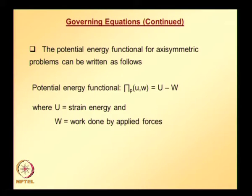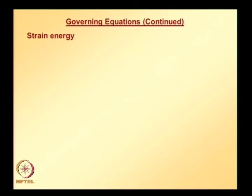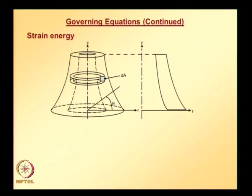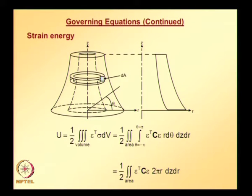We need to see how to calculate strain energy and the work done by the applied forces for axisymmetric problems. Strain energy is defined as the volume integral of epsilon transpose times sigma. Since the problem is axisymmetric, we can integrate theta from minus pi to pi and simplify. Finally, strain energy is given by half times the area integral of epsilon transpose C times epsilon times 2 pi r.